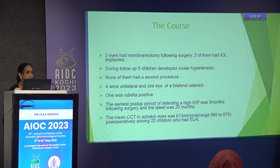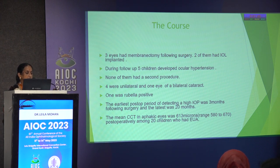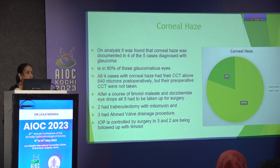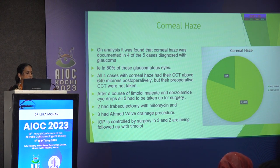Mean preoperative IOP was 16 mmHg and 3 eyes had membranectomy following surgery. During follow-up, 5 children developed ocular hypertension — 4 unilateral and 1 eye of a bilateral cataract case, 1 being rubella positive. The earliest post-op detection of high IOP was 3 months and the latest was 20 months. The mean CCT in aphakic eyes was 613 microns post-operatively. Corneal haze was documented in 4 of the 5 cases diagnosed with glaucoma (80%). All 4 had CCT above 640 microns post-operatively. After topical timolol, maleate and dorzolamide, all 5 required surgery: 2 had trabeculectomy with mitomycin and 3 had Ahmed valve drainage procedure.